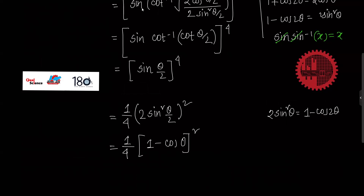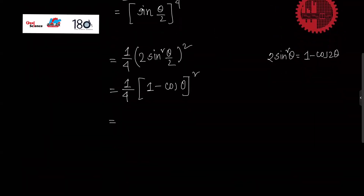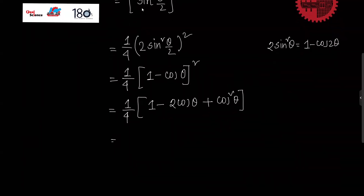We have (1 minus cos theta) whole square. I am going to write this as one by 4 times (1 minus 2 cos theta plus cos squared theta).